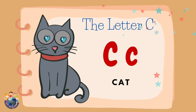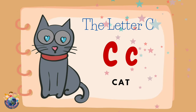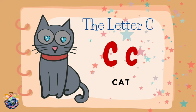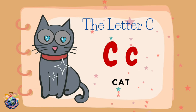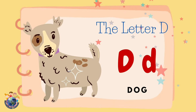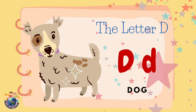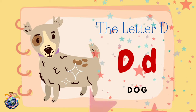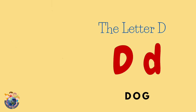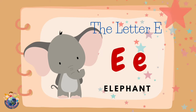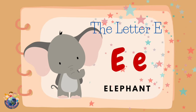The letter C. C is for cat. Cat. The letter D. D is for dog. Dog. The letter E. E is for elephant. Elephant.